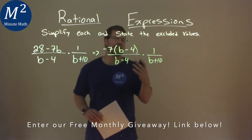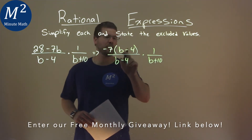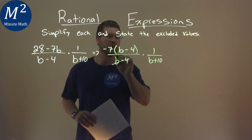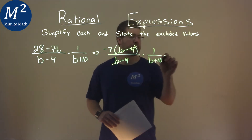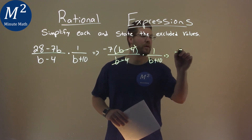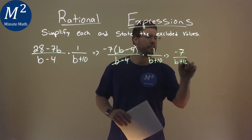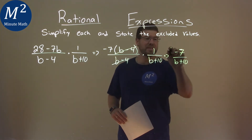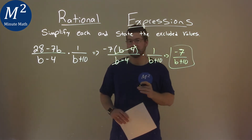And what that did for us is I see a b minus 4 and b minus 4 here — cross them out, they cancel each other. So we're left with a negative 7 in the numerator and a b plus 10 in the denominator. And that's actually our expression simplified.